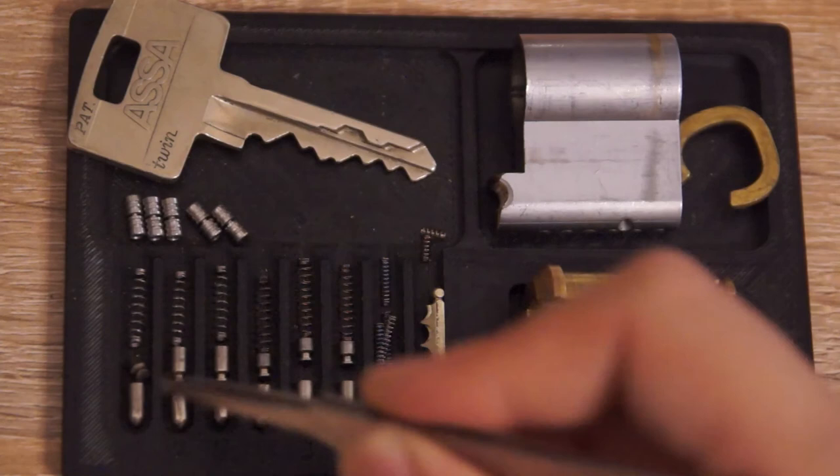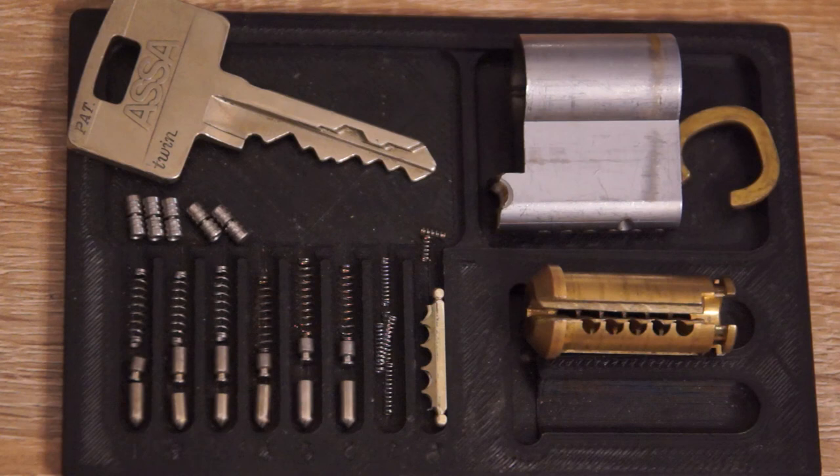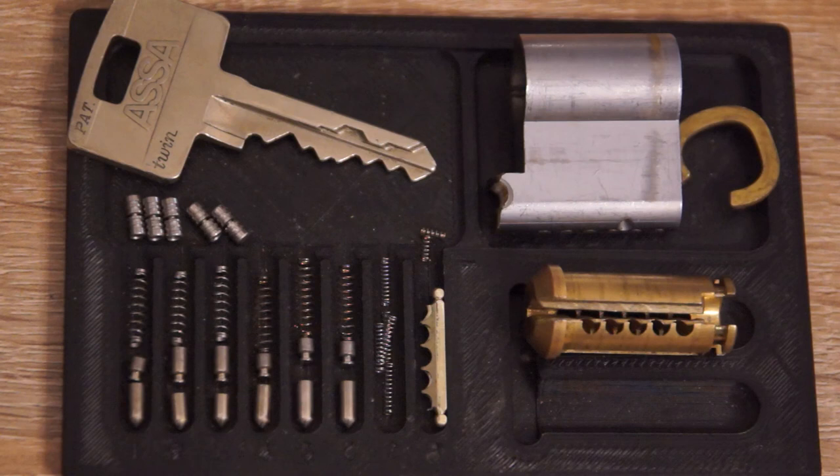That's the Esser Twin 6000. All in all, one of the most difficult locks I picked so far. It took me quite a while to learn how to deal with those pins and the lock. I hope you like it. That's it for today. Thanks for watching and see you soon. Goodbye.